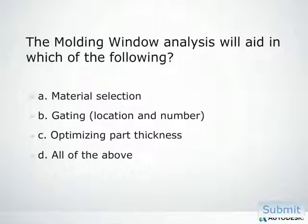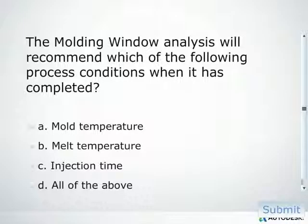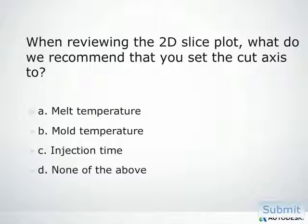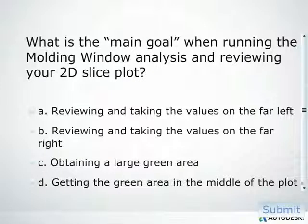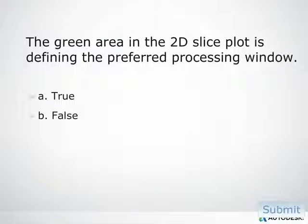The molding window analysis will aid in which of the following? The molding window analysis will recommend which of the following process conditions when it has completed? When reviewing the 2D slice plot, what do we recommend that you set your cut axis to? What is the main goal when running the molding window analysis and reviewing your 2D slice plot? The green area in the 2D slice plot is defining the preferred processing window — true or false?